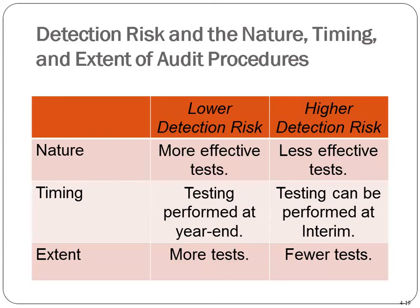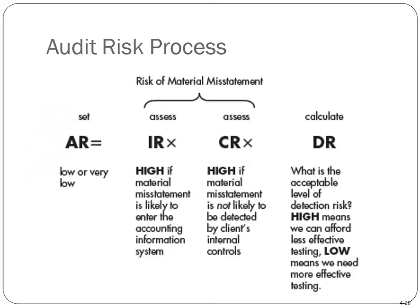Here's how the model flows: you set the AR initially low — typically 3 to 5 percent, standard for the industry. Then you assess the risk of material misstatement: IR is high if material misstatement is likely to enter the accounting information system; CR is high if misstatements are not likely to be detected by internal controls. You assess those two, then calculate DR as the remaining variable. High DR means you can afford less effective testing; low DR means you need more effective testing.